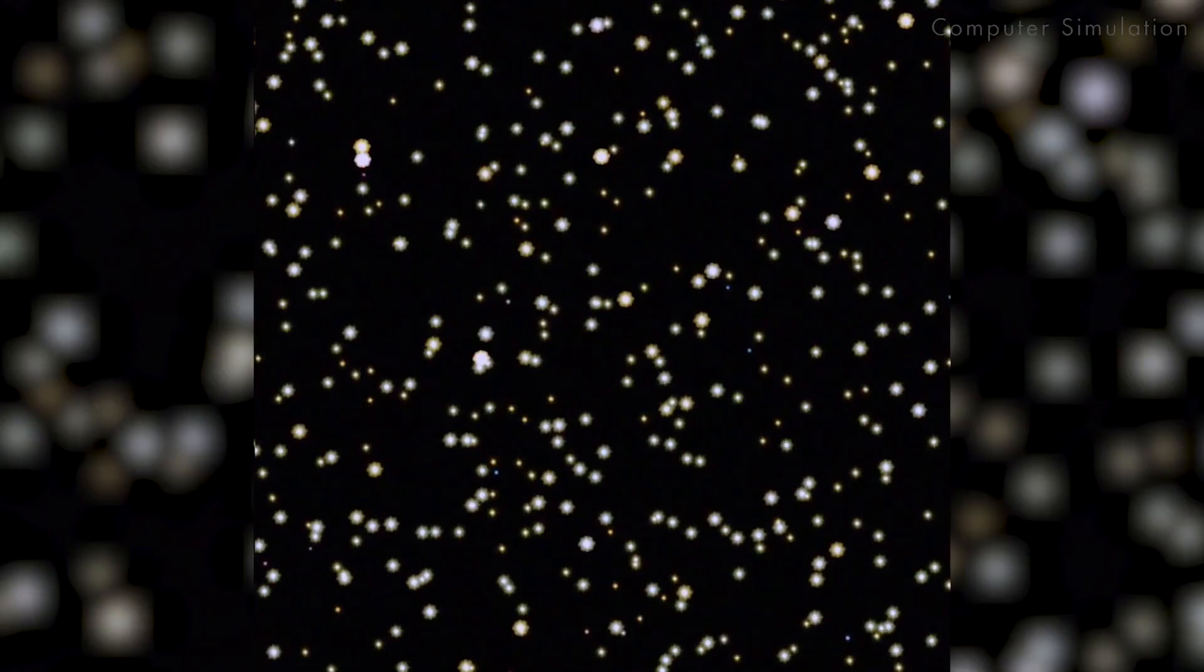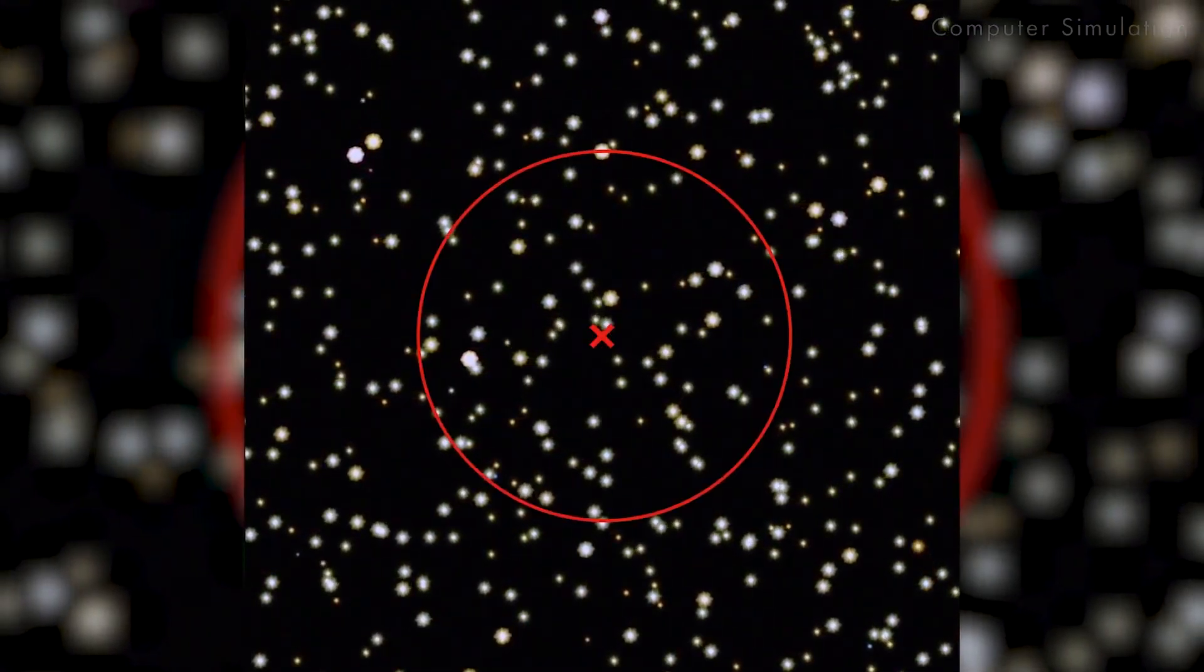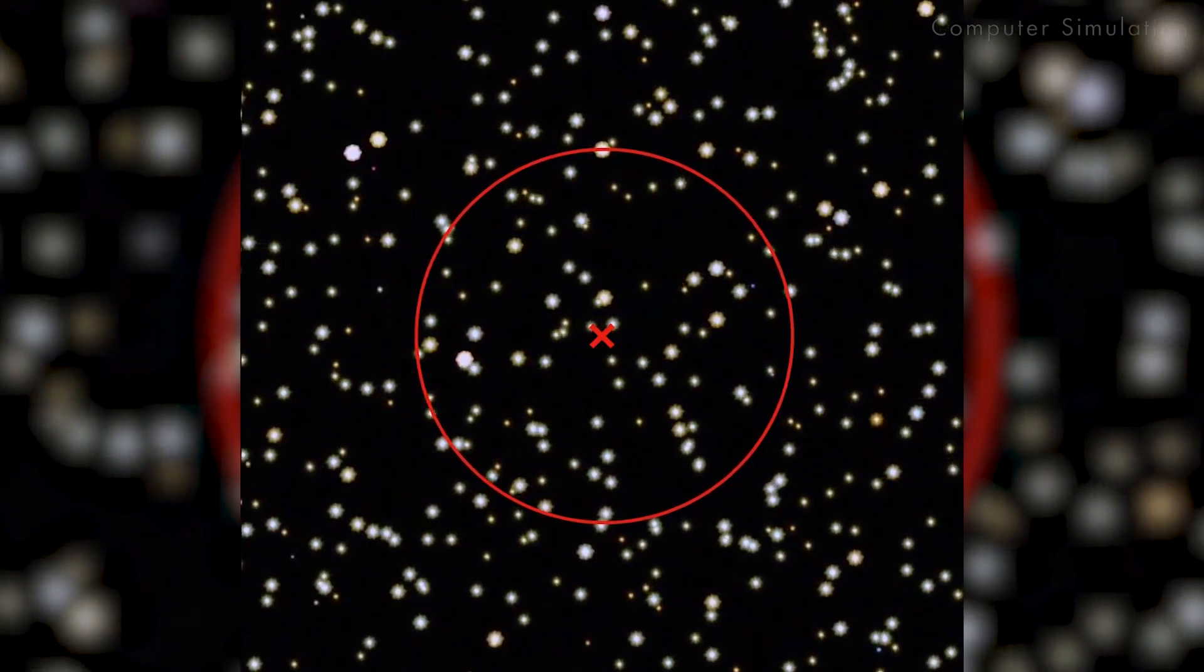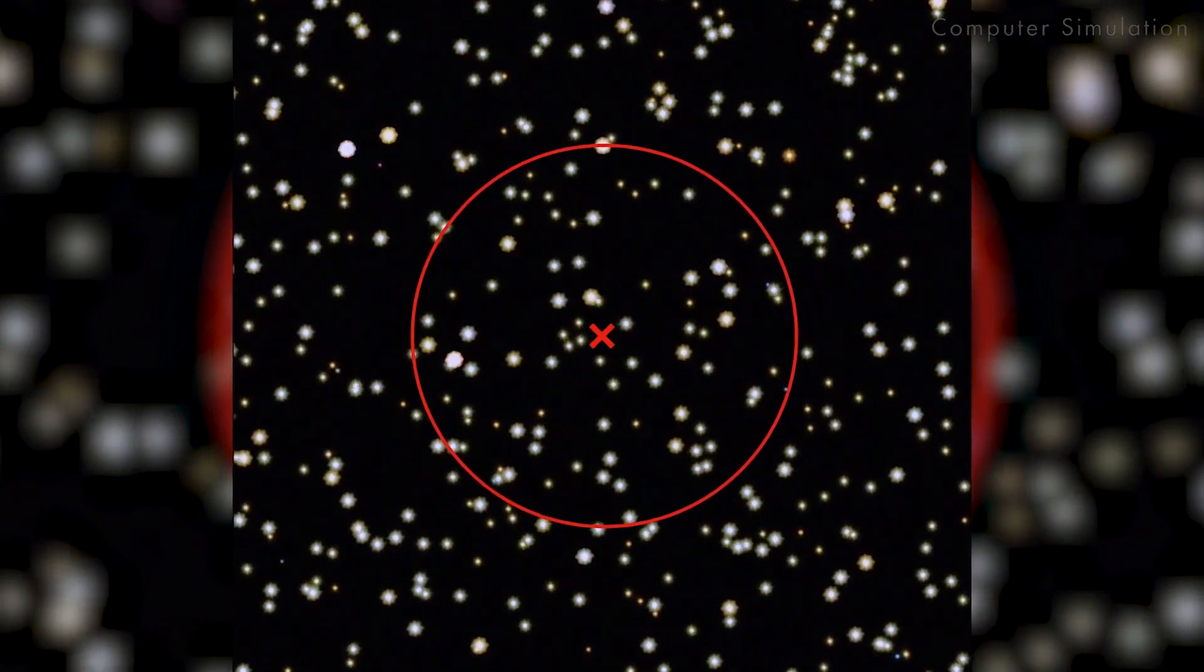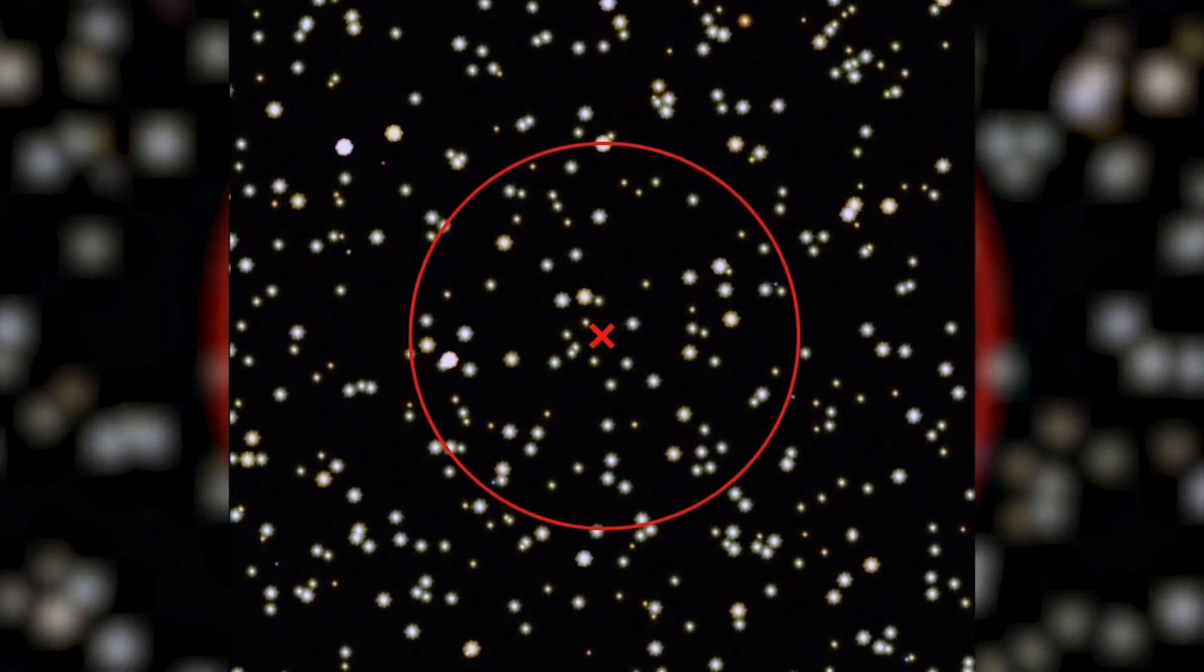They calculated the suspected black hole's mass by studying the motion of stars caught in its gravitational field using 12 and a half years worth of Messier 4 observations from Hubble. The researchers estimate that the black hole could be as much as 800 times the mass of our sun.